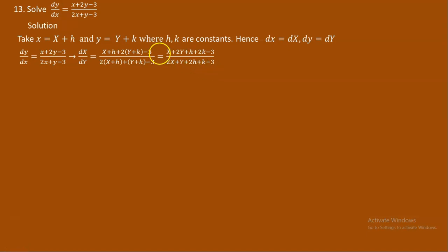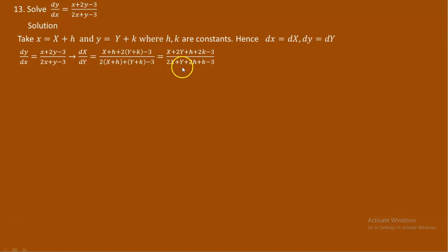Now, if we consider this as it is, this by itself cannot be homogeneous. For this to be homogeneous, the constants h plus 2k minus 3 and 2h plus k minus 3 must both be zero. These constants have restricted us from calling this DE homogeneous. So let's eliminate these constants.